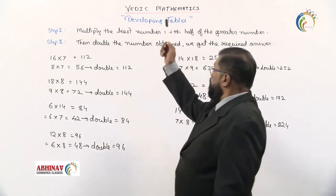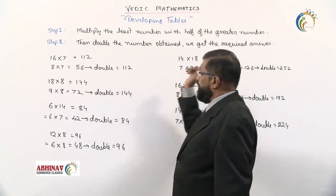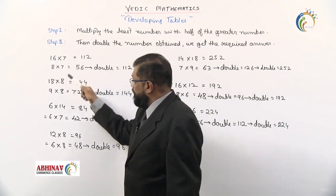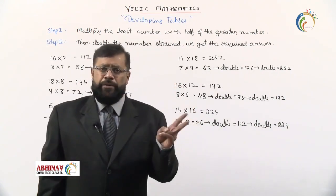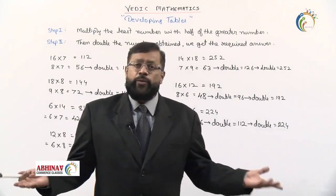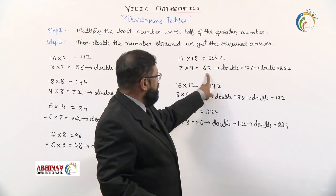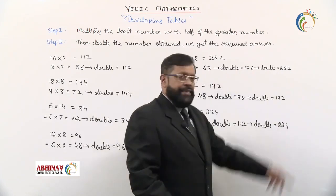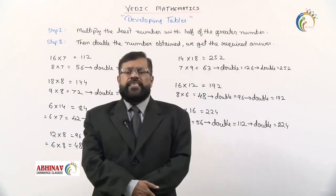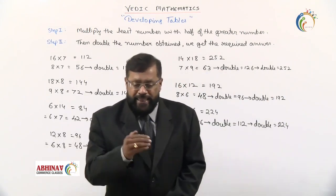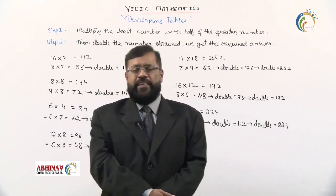I repeat. Multiply the least number with half of the greater number, then double the number obtained, we get the required answer. This step is to be applied when we have one single digit number. If you have two digit numbers, both are two digits, double it twice. We halve the numbers, we get the answer, double it, again double it. That is our required answer. These are the tricks what we should understand. So in this session we have learned how to develop the tables. In the next session we shall start with some multiplication tricks using Vedic mathematics. Thank you.